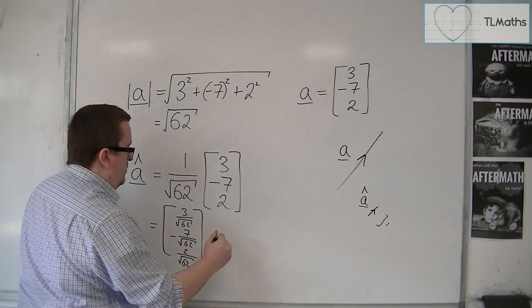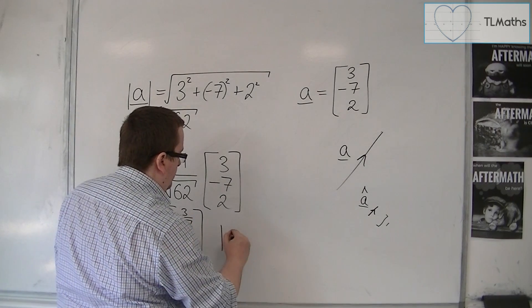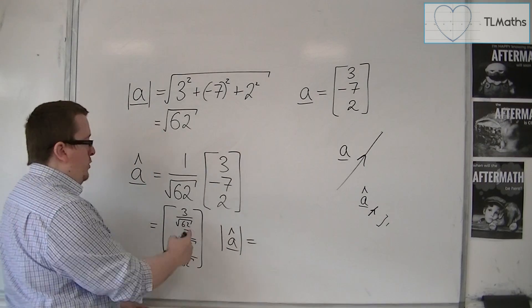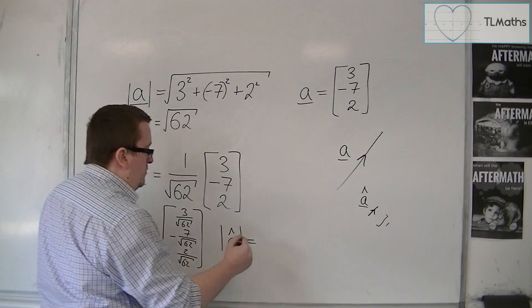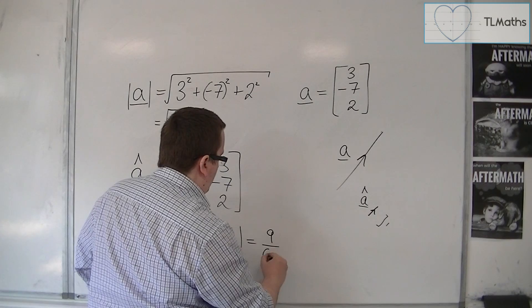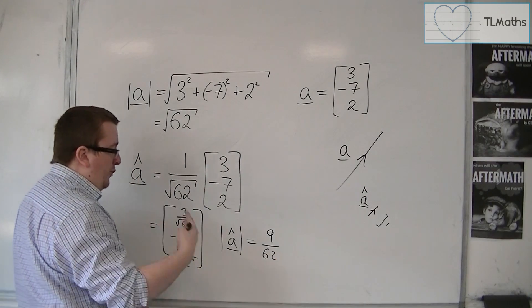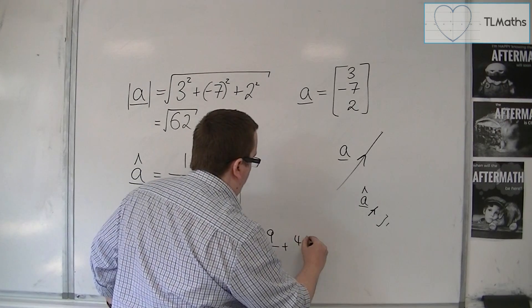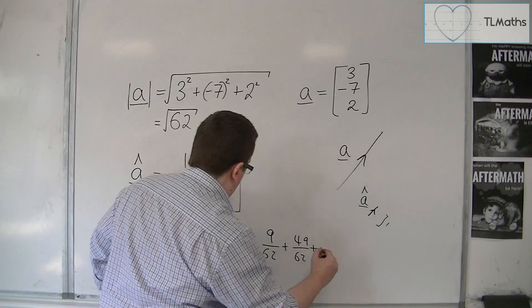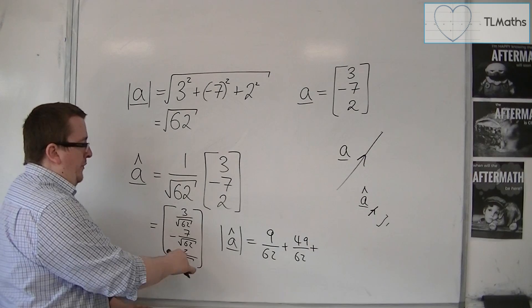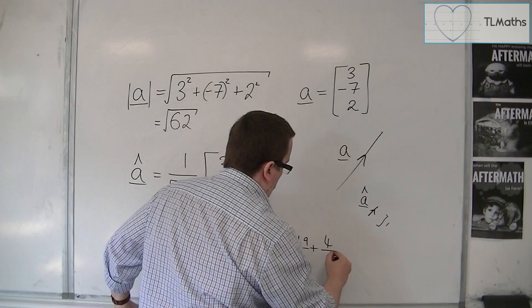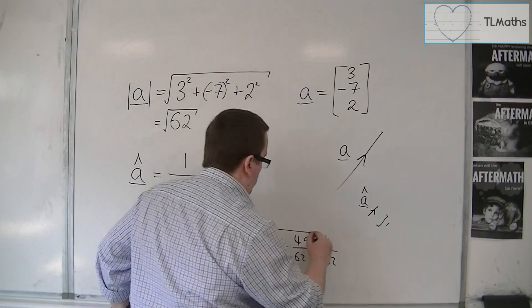And then you found the length of this vector. You'd have 3 over root 62 squared, so 9 over 62. You'd have minus 7 over root 62 squared, so 49 over 62. And then 2 over root 62 squared, so 4 over 62, square rooted.